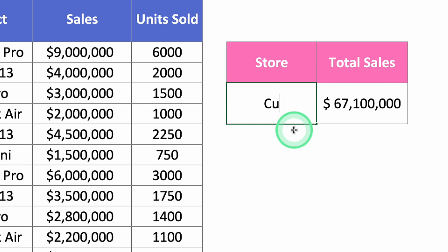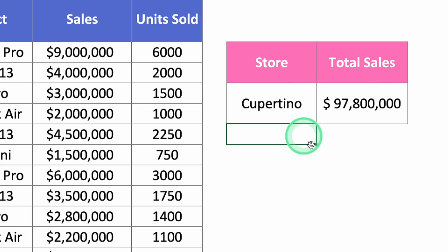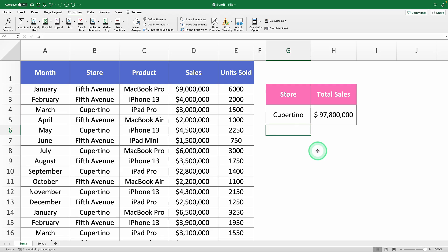What happens if you swap this store with Cupertino? It updates all by itself. You now have a 100% dynamic and reusable formula. If you want to visually see the percentage each store contributed to the total, you could create a pie chart — but that's a magic trick for another video, which I'll link up here.